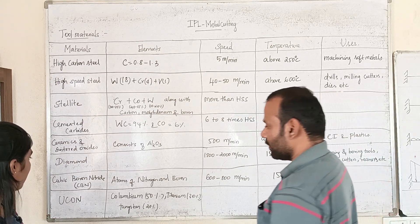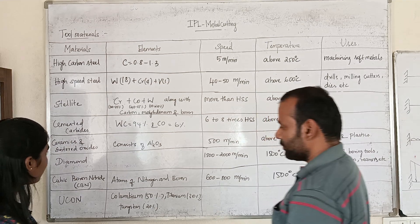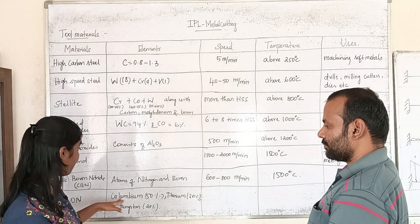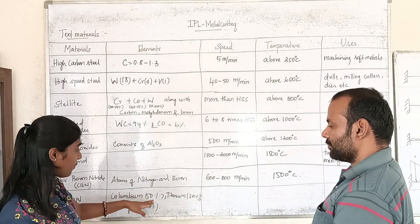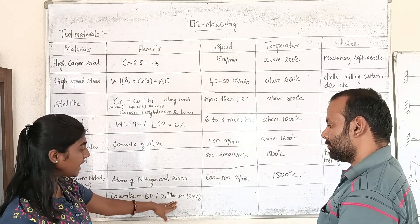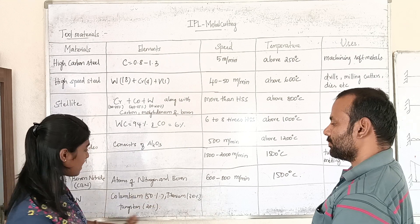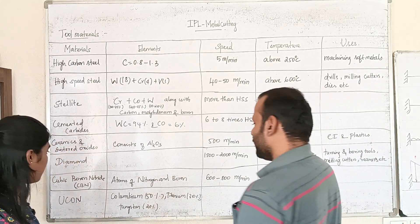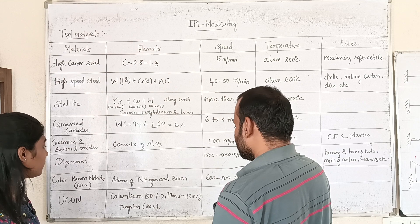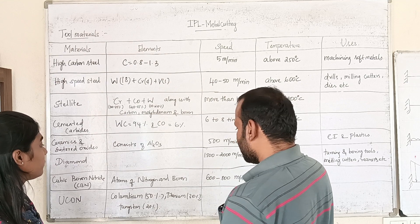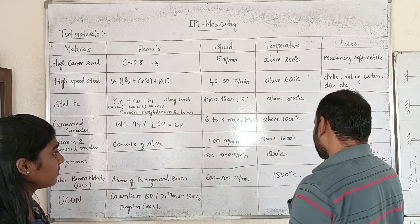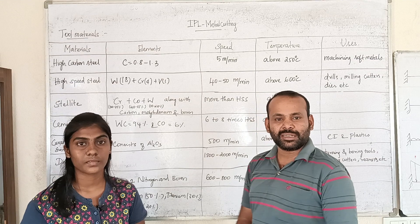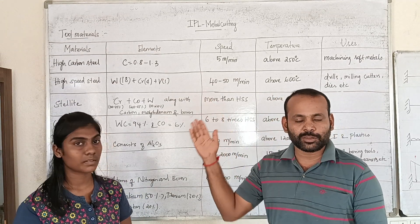Another material is Ucon. Ucon contains columbium 50%, titanium 30%, and tungsten 20%.